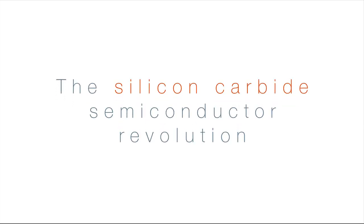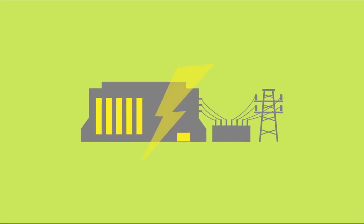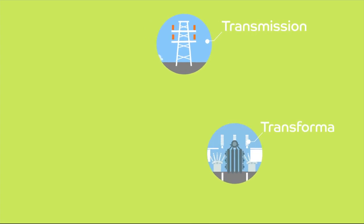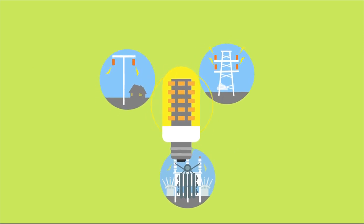The Silicon Carbide Semiconductor Revolution. Today, around 30% of all electricity generated is lost in transmission, transformation, distribution, and conversion between power plant and final point of use.